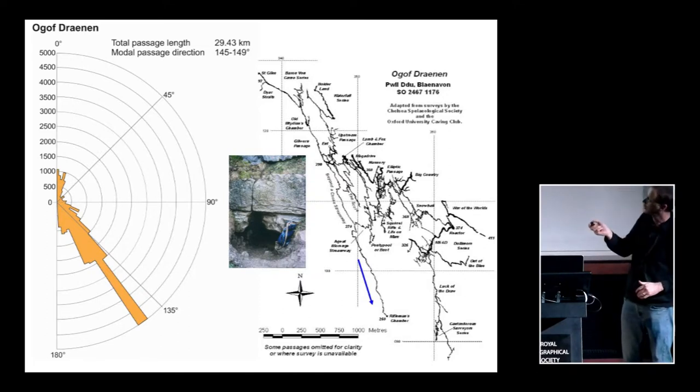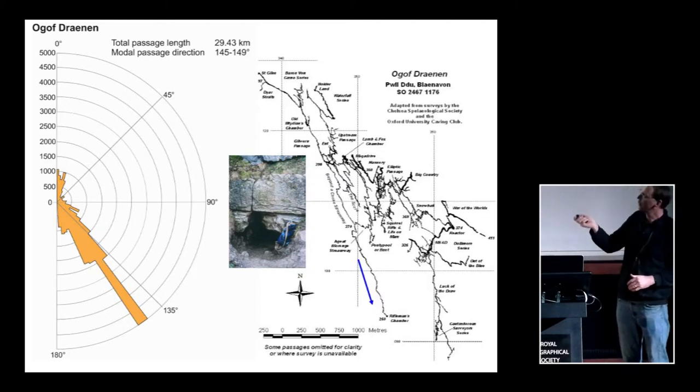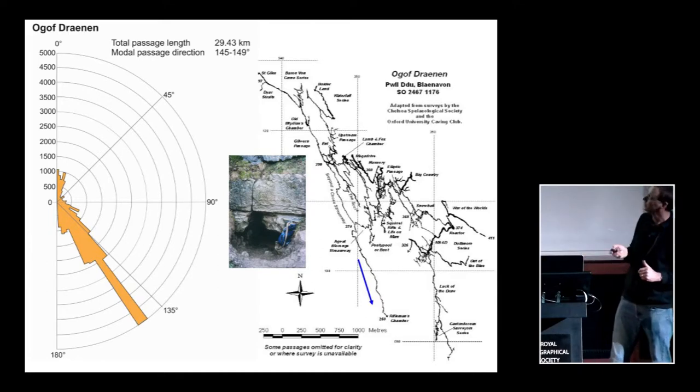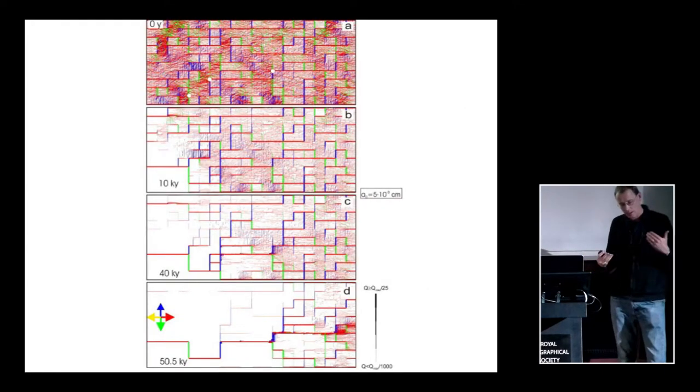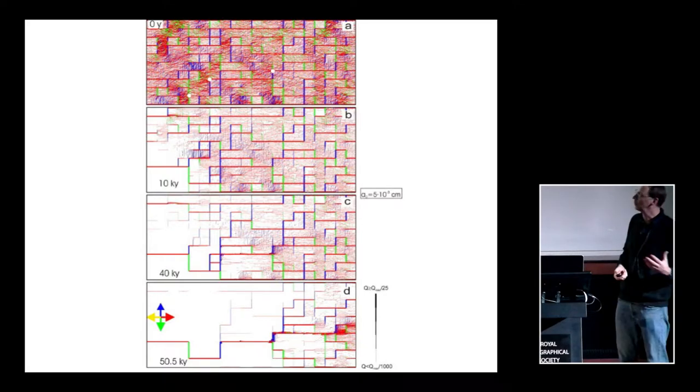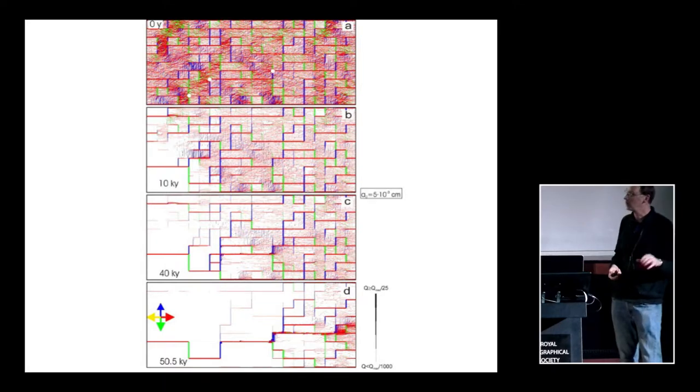So this is a classic example of a branchwork cave developed along fractures as opposed to bedding plane discontinuities. And you can see, a good example, that's the entrance there. Usually the smaller the cave entrance, the bigger the cave. It seems to be an inverse relationship.